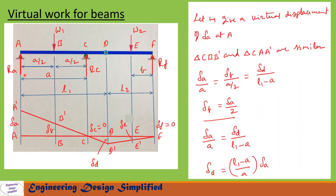Now to find reaction at A (Ra), let us give a virtual displacement of delta_A at A. The beams will assume position F-E'-D'-C-B'-A'. We have three similar triangles: CD-D', CB-B', and CA-A'. Displacements: delta_A at A, delta_B at B, delta_D at D; delta_C, delta_E and delta_F equal zero. From these triangles: delta_A / a = delta_B / (a/2) = delta_D / (L1 - a). So delta_B = delta_A / 2, and delta_D = ((L1 - a) / a) * delta_A.